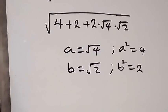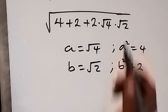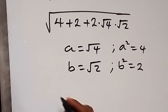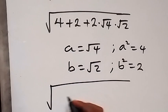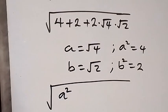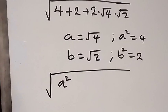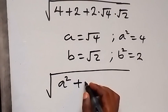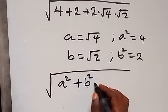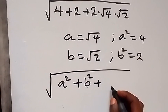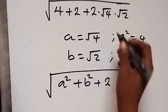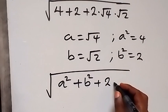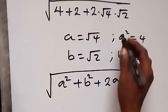Then we can write this expression again in terms of a and b. This will become square root of a squared plus b squared, then plus 2 times a times b — that is 2 times root 4 times root 2.